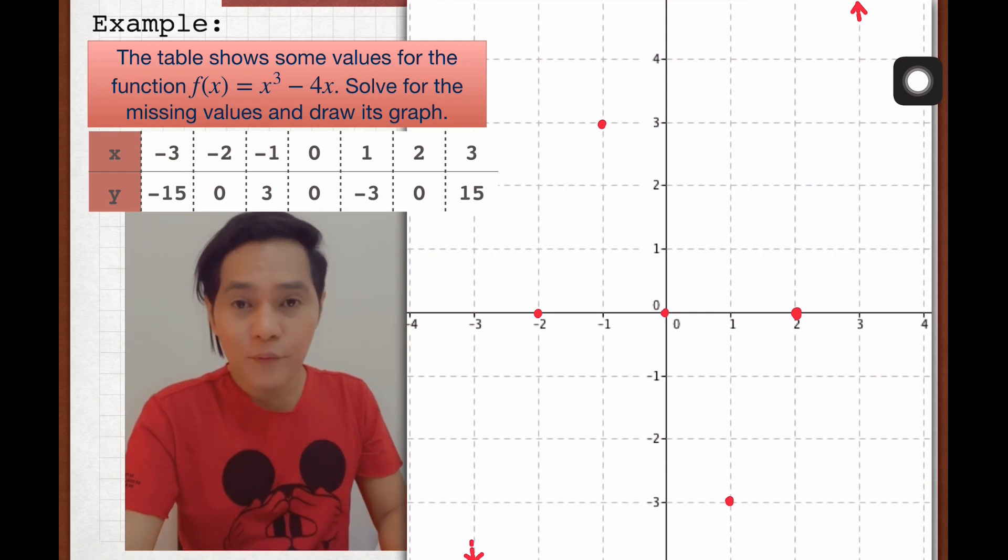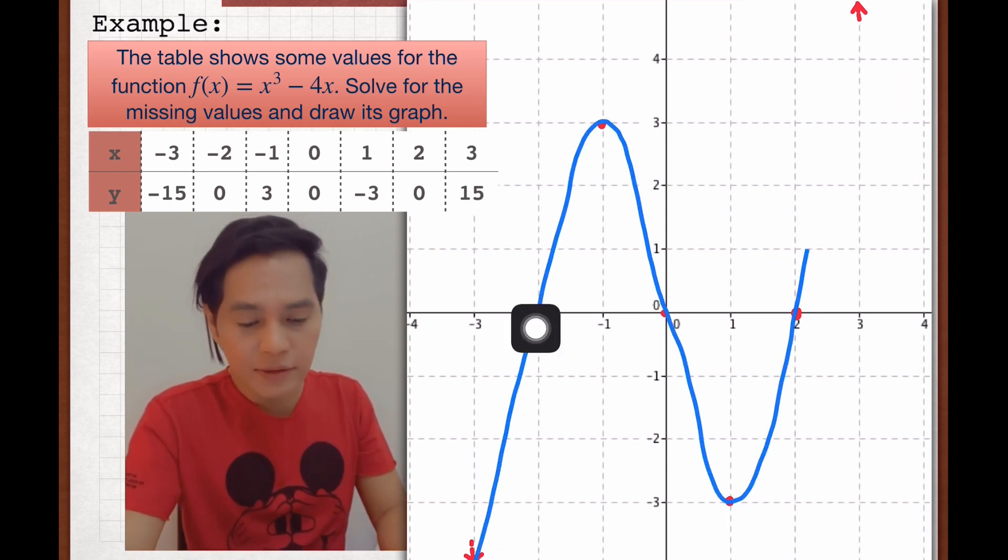So then we are going to connect the dots smoothly. So that's how you do that. And this is the graph of the function x³ - 4x.